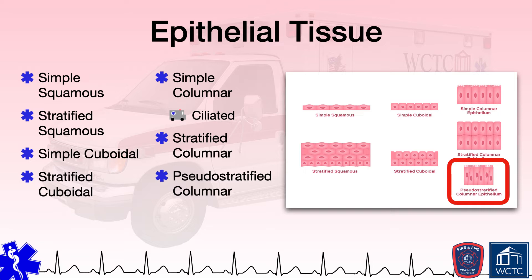Lastly, transitional epithelial tissues fluctuate between simple when stretched and stratified when not stretched. Aside from providing protection of underlying structures, transitional tissues can stretch and change appearance to look like other epithelial tissues. These tissues line the inside of the urinary bladder, the ureters, and part of the urethra.